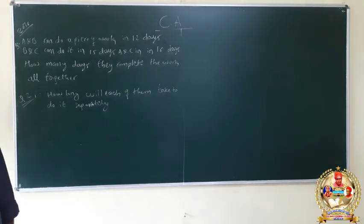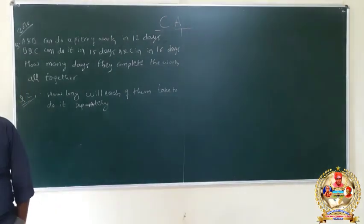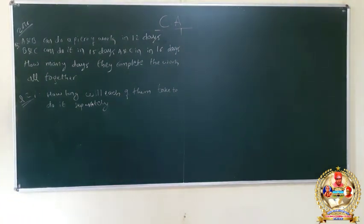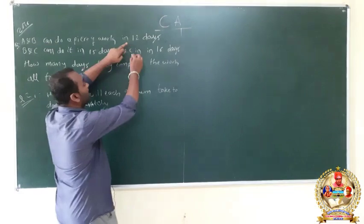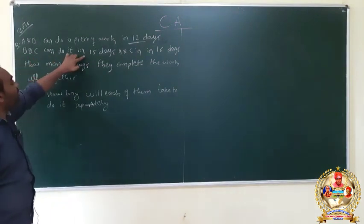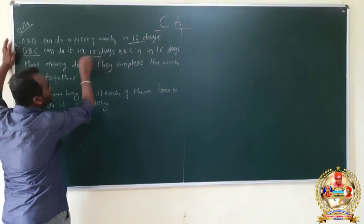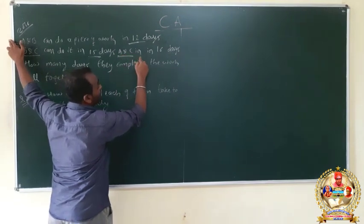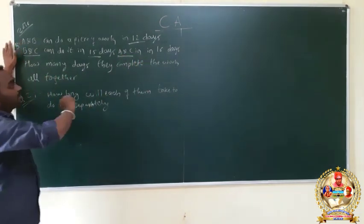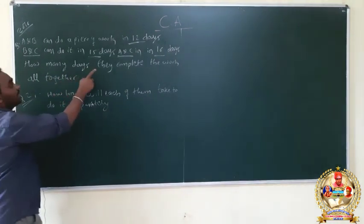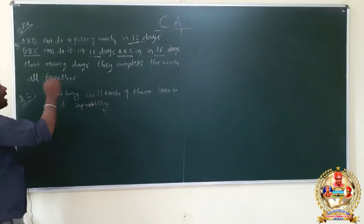For example: A and B can do a piece of work in 12 days. B and C can do it in 15 days. A and C can do it in 20 days. How many days will they complete the work all together?